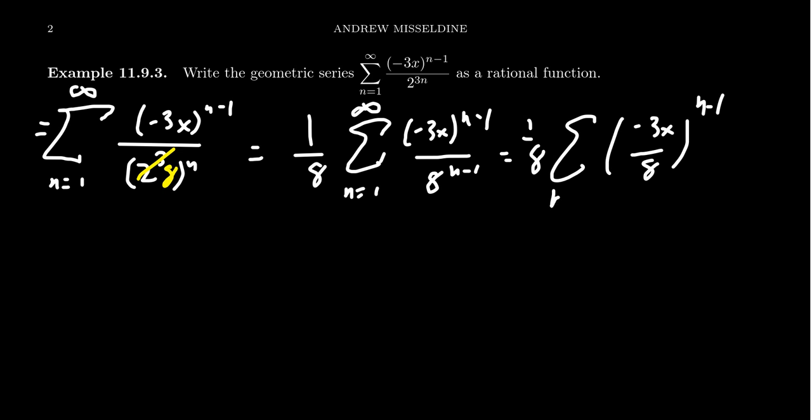So now we see, in fact, we do have this geometric sequence. And so as such, by the formula, we're going to have a 1/8 out in front just because of the coefficient of 1/8 that's already there. And then with our geometric series formula,